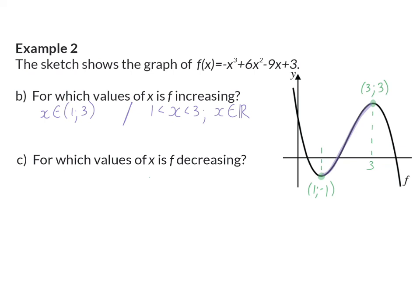In question c, we are asked for which values of x is f decreasing. The graph decreases as it moves down from left to right, and that means it has a negative gradient. This is before our first turning point, and then again after our second turning point. These are two separate parts, so two separate answers. Our first part is the interval where x is smaller than one. Our second part is where x is bigger than three. And again, you need to mention x is an element of real numbers.